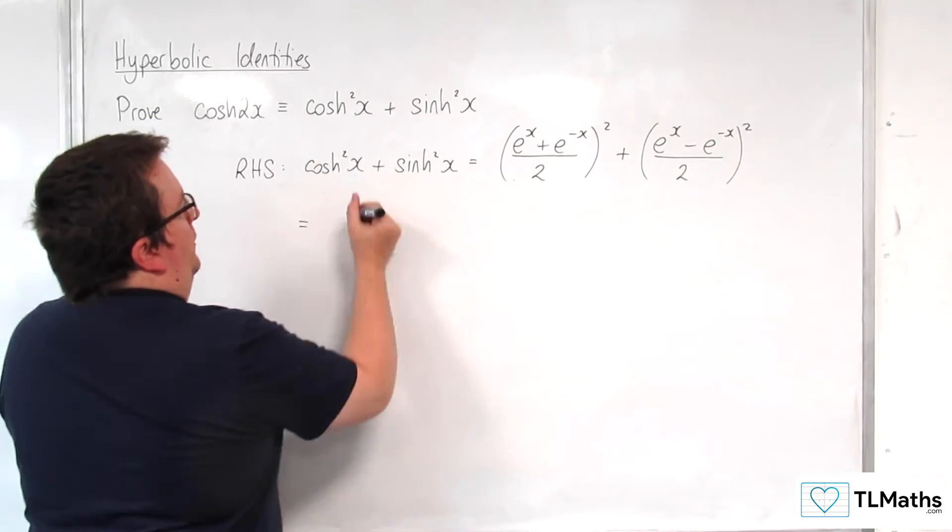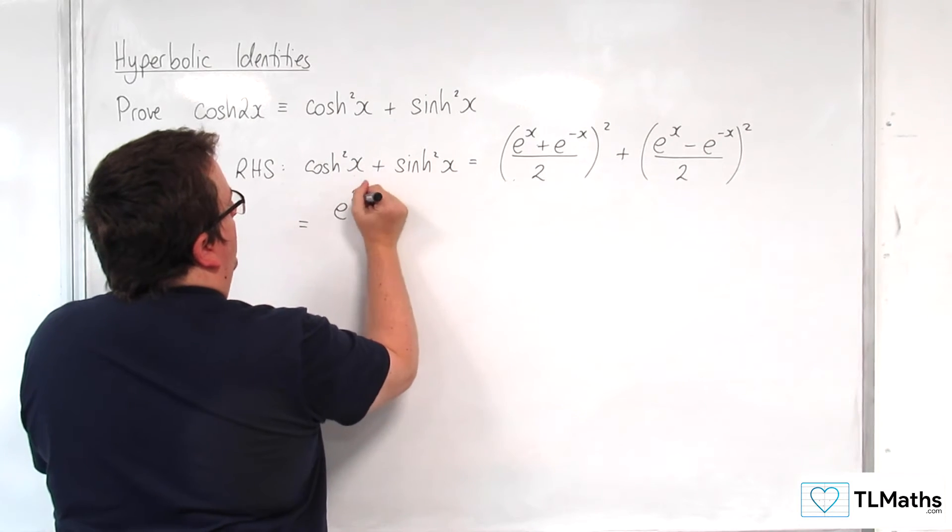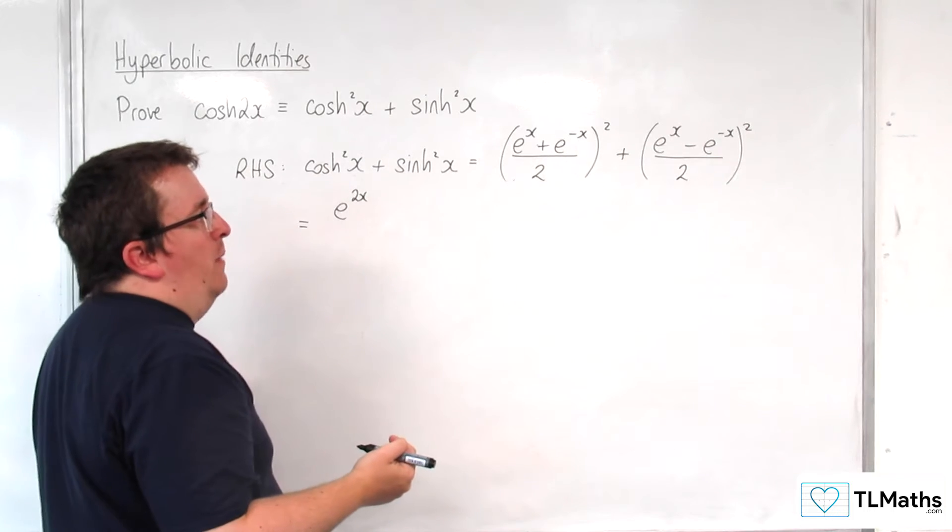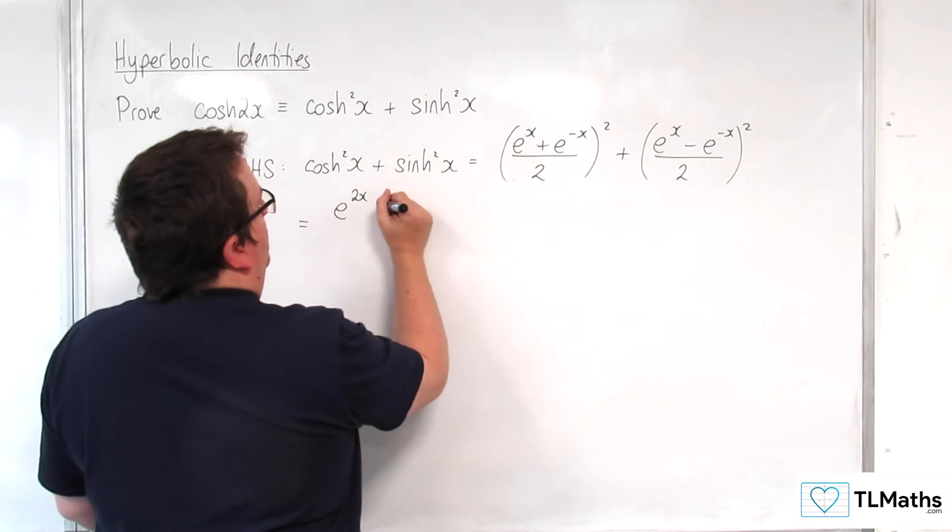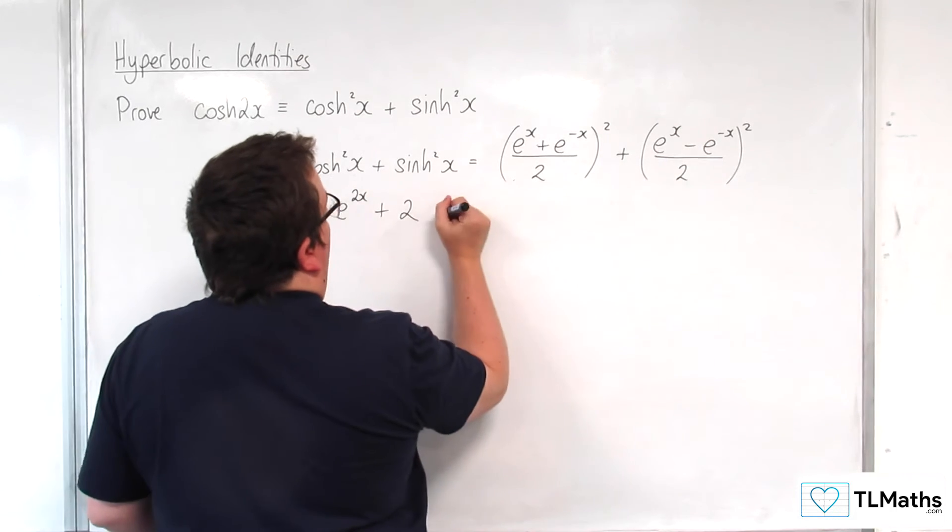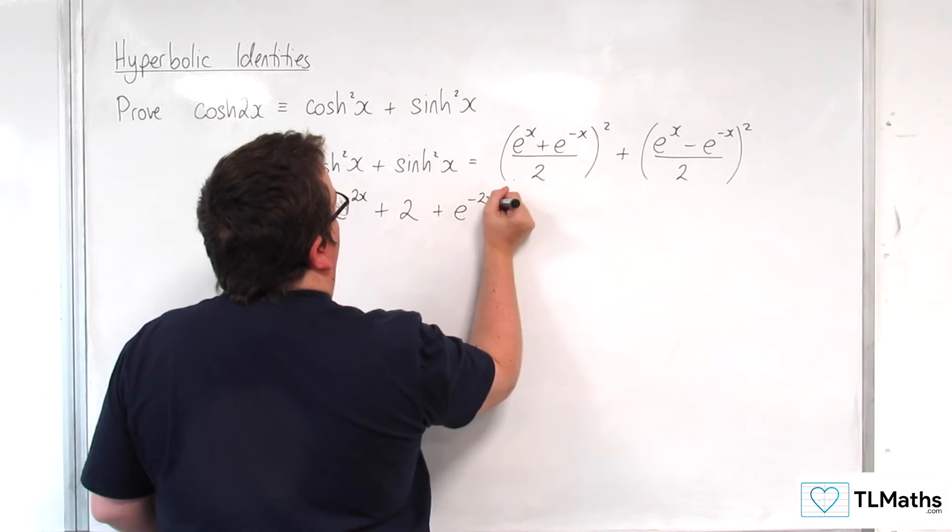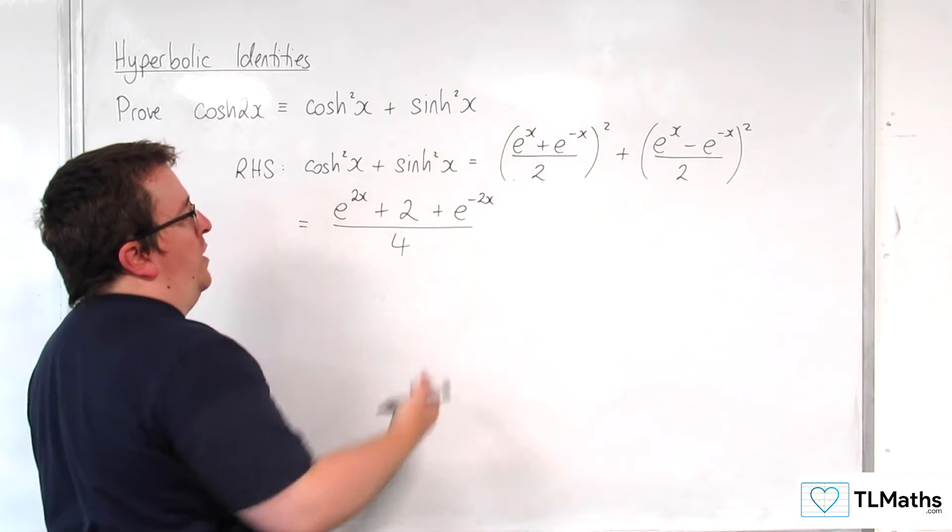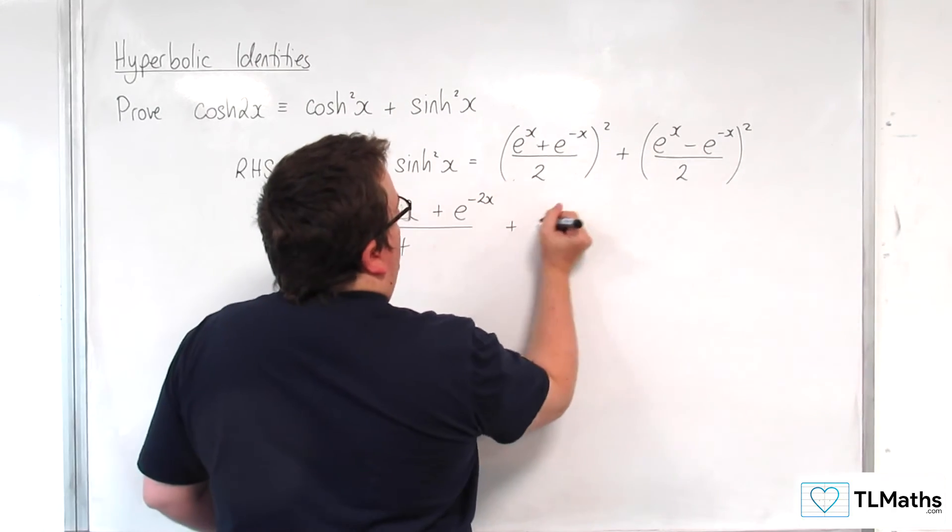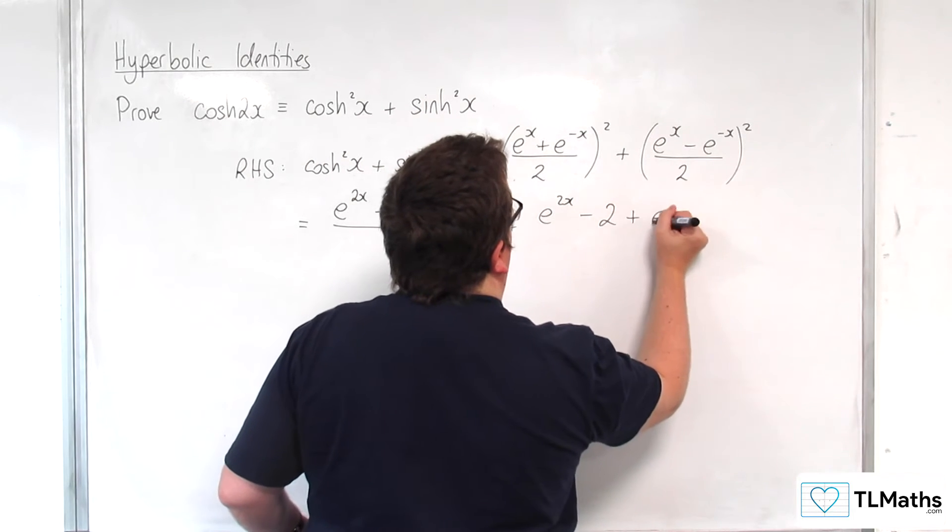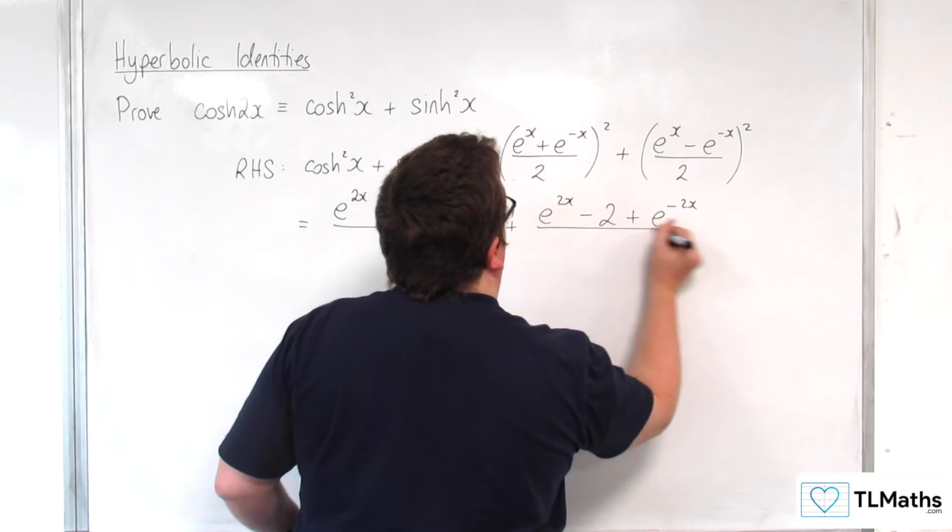So we've got e to the 2x and we've got e to the x times e to the minus x twice, so that's plus 2. Then we get plus e to the minus 2x, and that's over 4 because we've squared numerator and denominator. Then we've got e to the 2x take away 2 plus e to the minus 2x, and that's over 4.